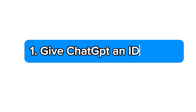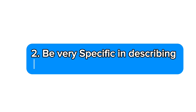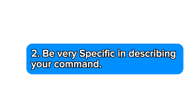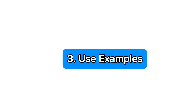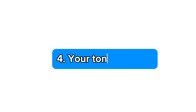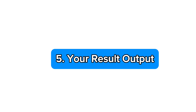Rule number one is to give ChatGPT a specific role — tell it exactly what you want it to be. Rule number two is to clearly write down what you want ChatGPT to do for you, being as specific as possible. Rule number three is to give an example of how you want it to provide your response. Rule number four is to tell ChatGPT how you want it to write for you — that is your preferred tone of voice and writing style.